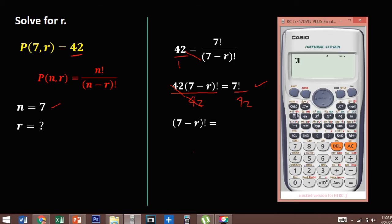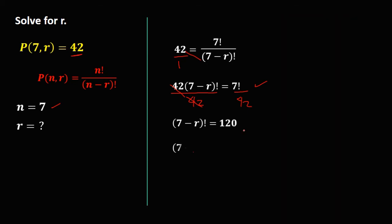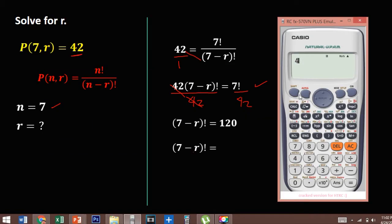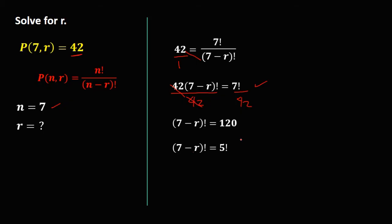So (7 minus R) factorial equals 7 factorial divided by 42, which is 120. We need to rewrite 120 in factorial form — trial and error: 4 factorial is 24, 5 factorial is 120. So 120 equals 5 factorial. Since both sides now have a factorial, we can drop the factorial notation. So 7 minus R equals 5.